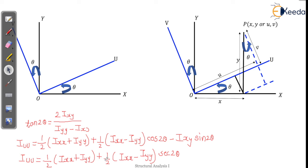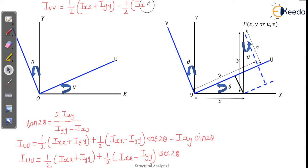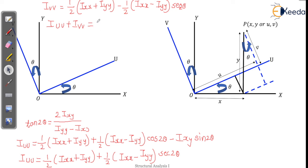Now IVV is written as: IVV = (1/2)(Ixx + Iyy) − (1/2)(Ixx − Iyy)·sec 2θ. We also have to understand that IUU plus IVV equals Ixx plus Iyy. So there is a final balance there.